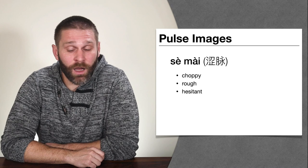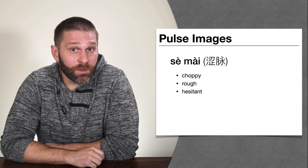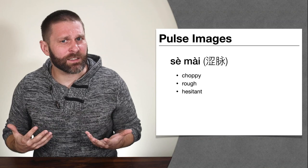Different books sometimes use different translations interchangeably, which can be confusing. The Bensky formulas book, for example, sometimes uses 'rough pulse' in one formula and 'choppy pulse' in the next — they mean the same thing. That book likely had several authors using different translations. So rough, choppy, and hesitant are all translations of sumai, referring to how smoothly the pulse flows through the vessel.